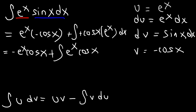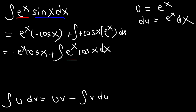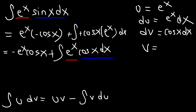Now we need to use integration by parts again on e to the x cosine x. Once again, we set u equal to e to the x, and du is e to the x dx. The other part, cosine x dx, we make equal to dv. So v, the integral of cosine, is positive sine x.